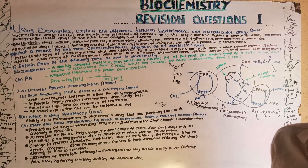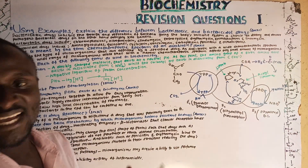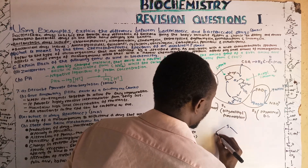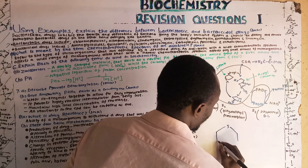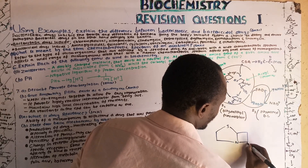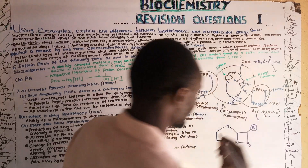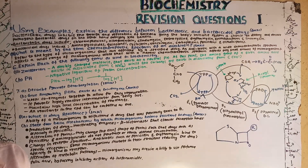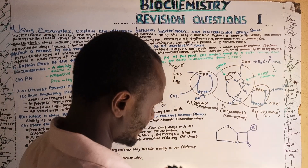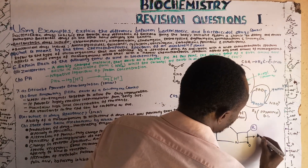Beta-lactamase interacts with penicillin. The basic structure of penicillin includes a beta-lactam ring and a thiazolidine ring, with a nitrogen atom, a sulfur atom, an oxygen atom, a double bond, and a side chain. The side chain varies from one type of penicillin to another.